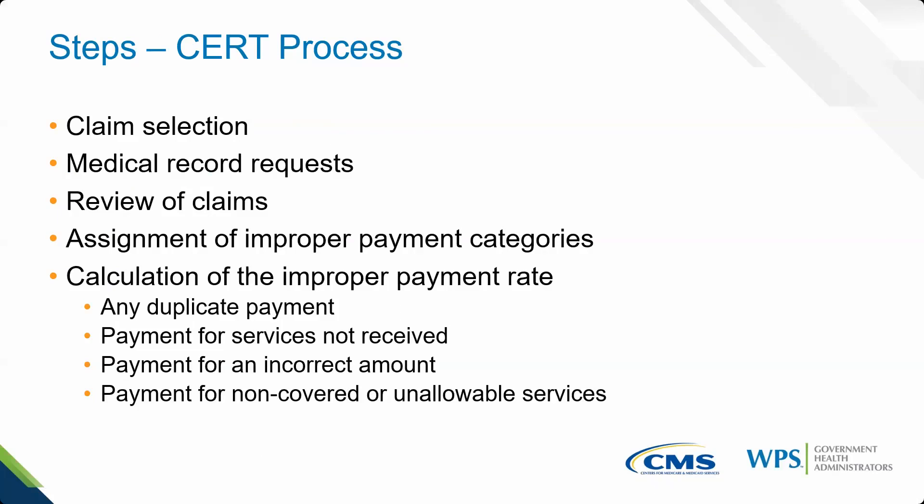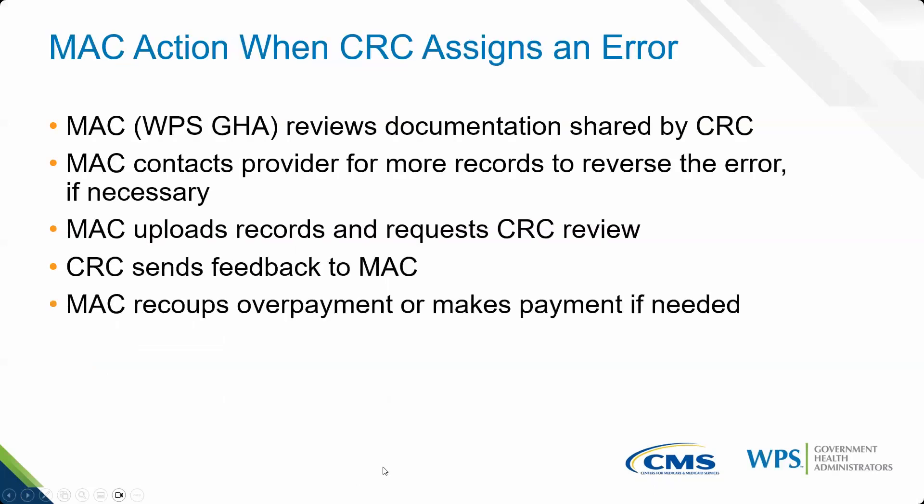CERT identifies an improperly paid claim as any duplicate payment, payment for services not received, payment for an incorrect amount, or payment for non-covered or unallowable services. For each of the errors identified, CERT assigns a category. When the review contractor assigns an error, they provide a notification to the MAC in what's called feedback files. And the MAC reviews the same documentation that is shared by the CERT review contractor. Sometimes the MAC may file a dispute if the MAC disagrees with the error finding.